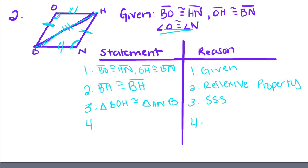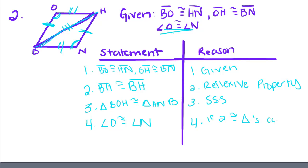Then we can say that angle O is congruent to angle N, because when we have congruent triangles, their corresponding parts are also congruent — CPCTC. And that's all we have to do for that one.